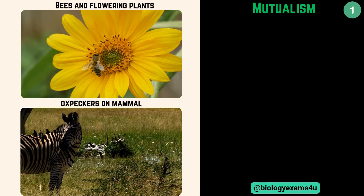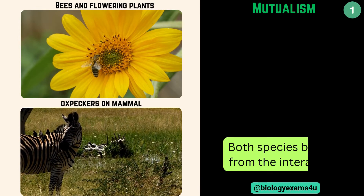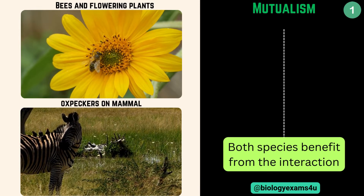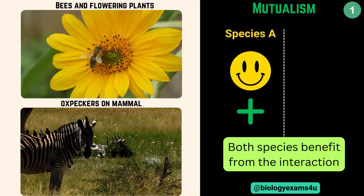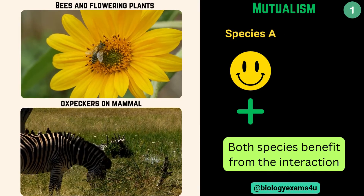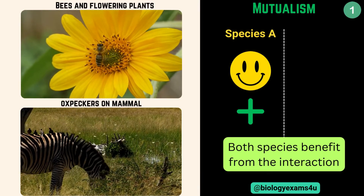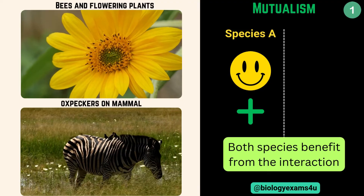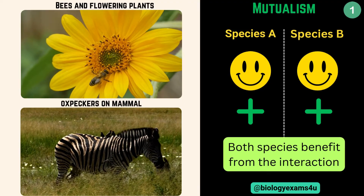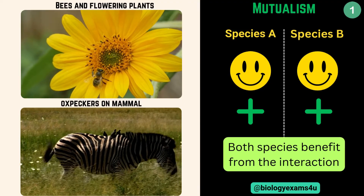In mutualism, both species benefit from the interaction. So species A is happy — let's give the plus sign for beneficial interaction. Species B is also benefited, so it also gets a plus sign.